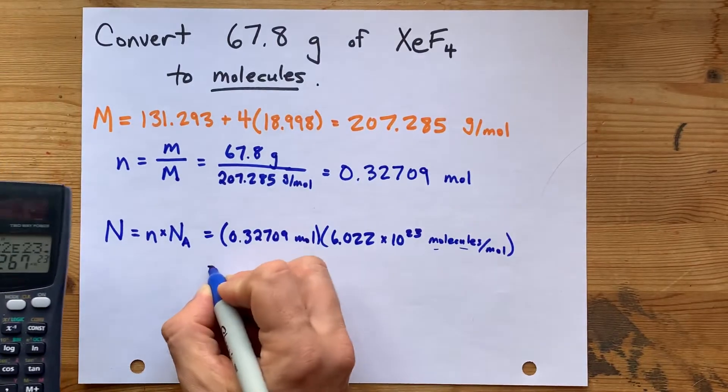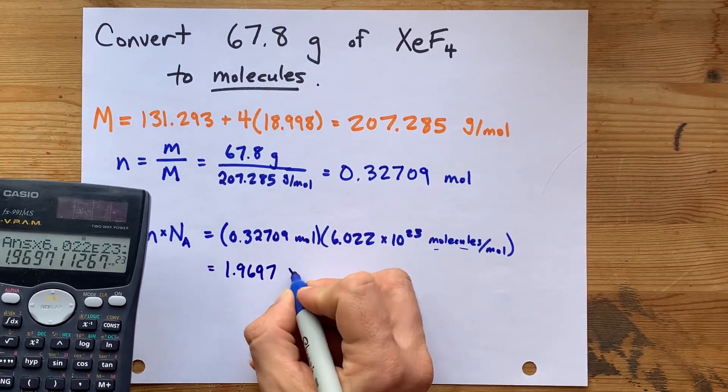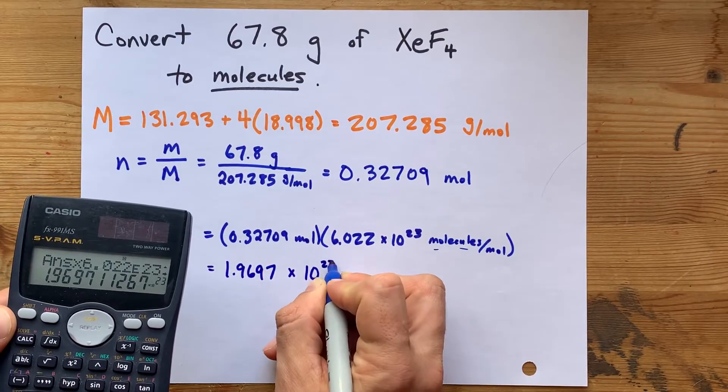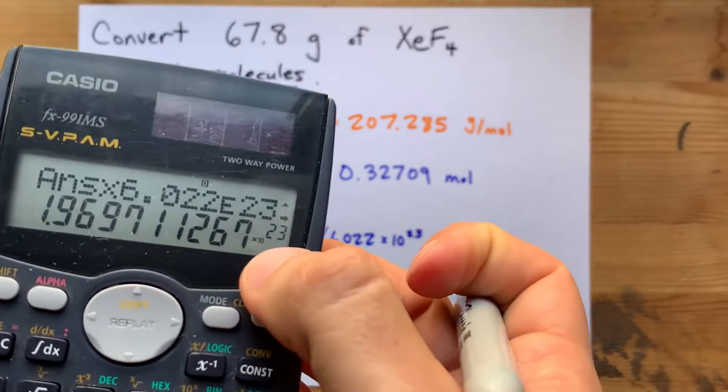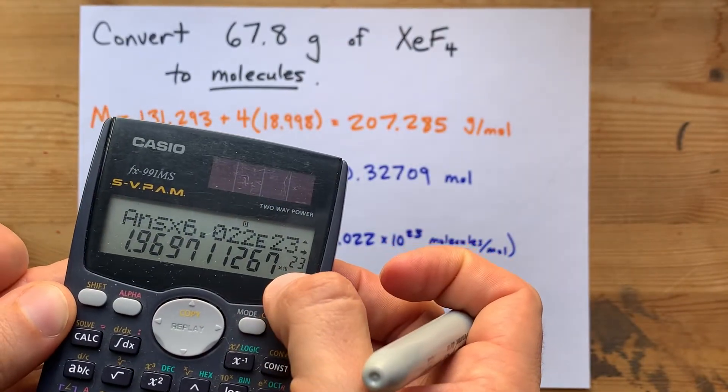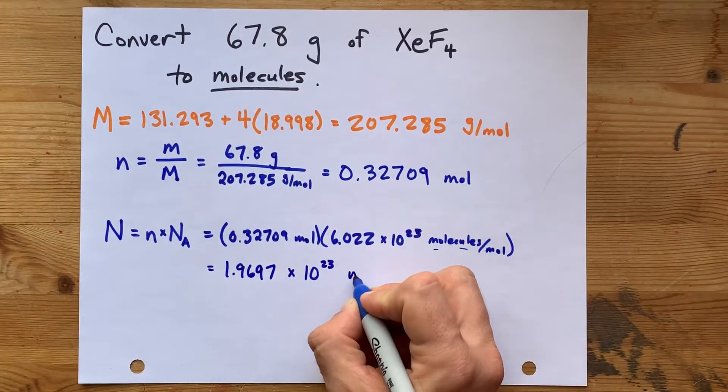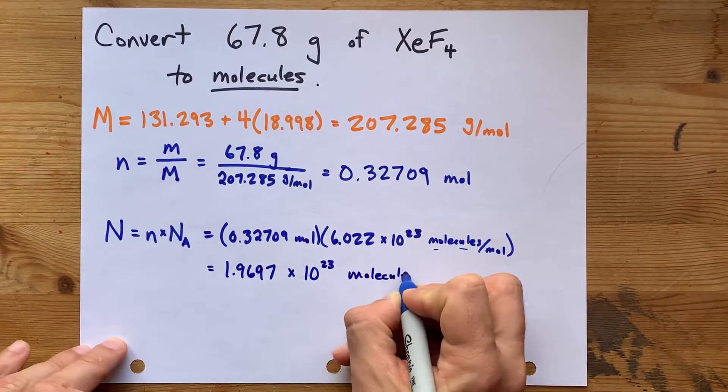My final answer here is 1.9697 times 10 to the power of 23. Note that this calculator says times 10, 23. Your calculator might have a capital E and then the 23 written. That means times 10 to the power of. Now, this is the number of molecules.